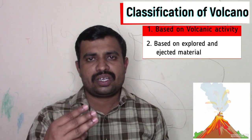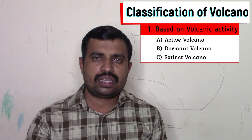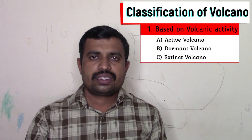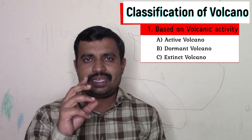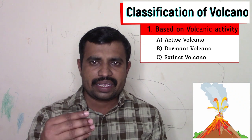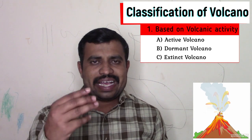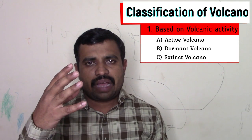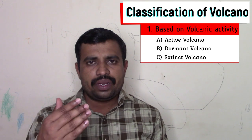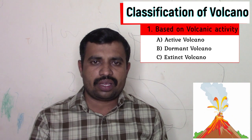Now let's start the lesson. First, we will discuss classification based upon the activity, which shows three types of volcanoes: active, dormant, and extinct. Active volcanoes eject lava, gases, and material continuously. Some active volcanoes emit lava every 15 to 20 minutes, and such volcanoes are called active volcanoes.